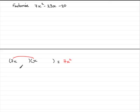OK, now we need to find two numbers that multiply together to give minus 20. Well, they've got to have opposite signs. One's got to be a plus, one's got to be a minus.